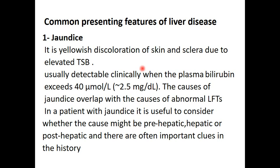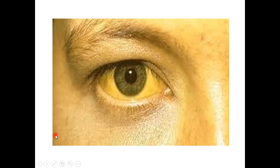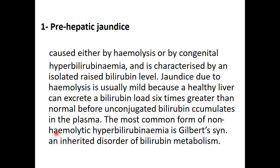Pre-hepatic jaundice is caused by hemolysis — hemolytic jaundice — or by congenital hyperbilirubinemia. It is characterized by isolated raised bilirubin, where the total serum bilirubin is elevated and mainly indirect (unconjugated). Jaundice due to hemolysis is usually mild, because a healthy liver can excrete a bilirubin load six times greater than normal before unconjugated bilirubin accumulates in the plasma. The most common form of non-hemolytic hyperbilirubinemia is Gilbert's syndrome, which presents with mild jaundice and normal other liver function tests. It is an inherited disorder of bilirubin metabolism.